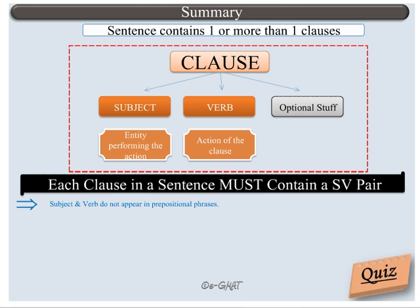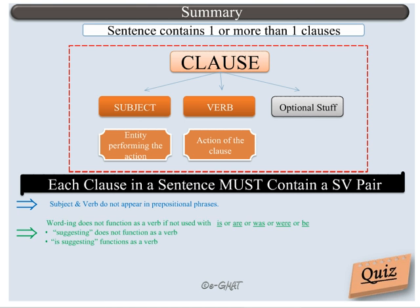Next, we know that a word ending in -ing is a verb only if it is used with is, are, was, were, or be, and that if a verb is preceded by 'to,' then it no longer functions as a verb.